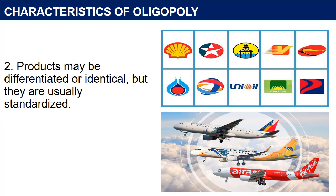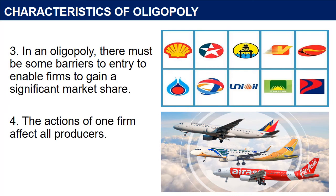Characteristic 2: Products may be differentiated or identical, but they are usually standardized. Sellers offer a differentiated and identical product such as petroleum which has different variants. In an oligopoly, firms often compete on non-price competition, making advertising and the quality of the product often important. 3. In an oligopoly, there must be some barriers to entry to enable firms to gain a significant market share.